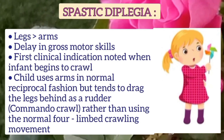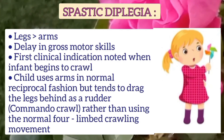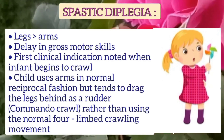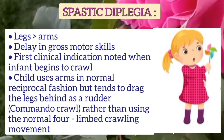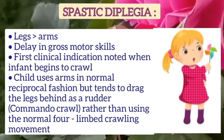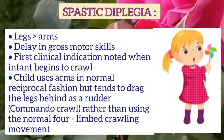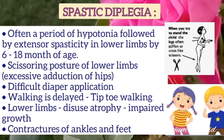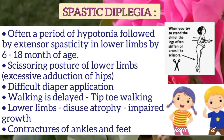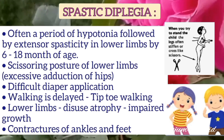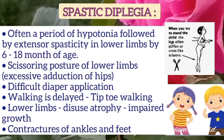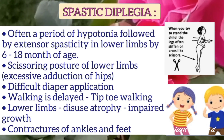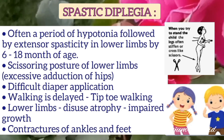In spastic diplegia, both legs are involved more than the arms. Delay in gross motor skills is noted when the infant begins to crawl — the child uses arms in normal reciprocal fashion but tends to drag the legs behind, rather than using normal four-limb crawling. There is often a period of hypotonia followed by extensive spasticity in lower limbs by 6 to 18 months. Scissoring posture of the lower limbs is due to excessive adduction of hips. Diaper application is difficult, walking is delayed, and tiptoe walking is present.